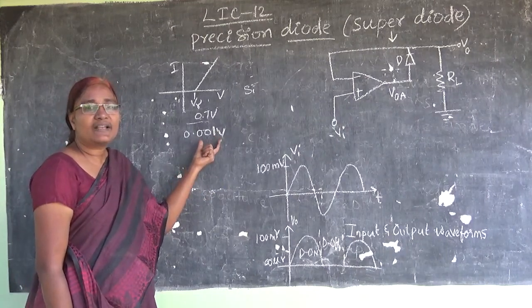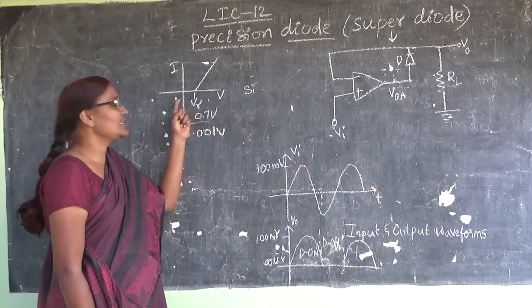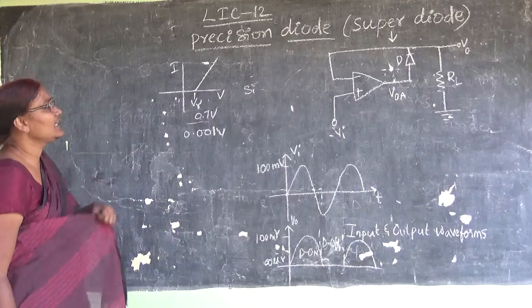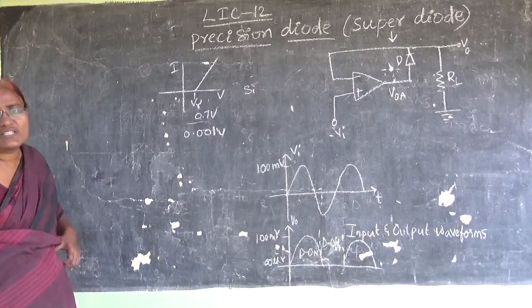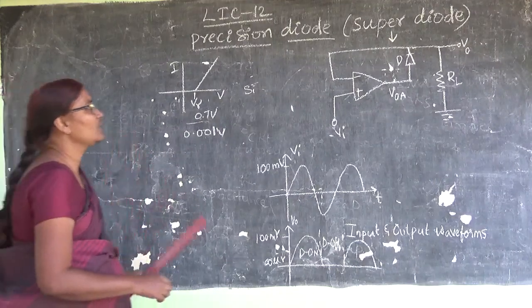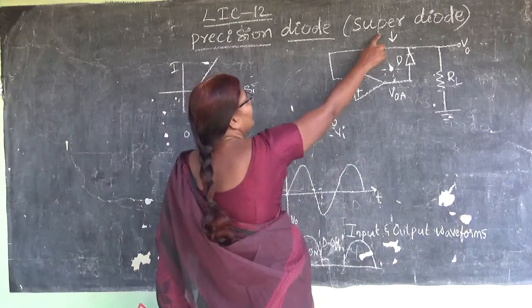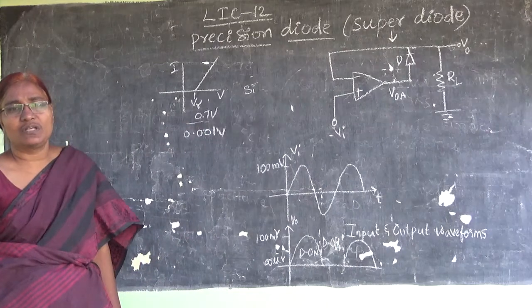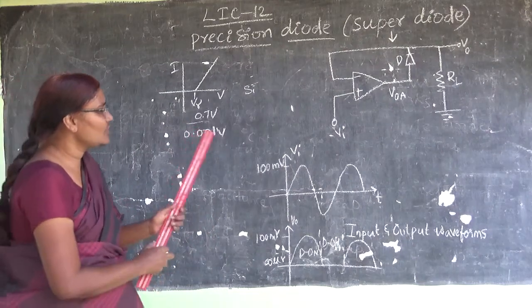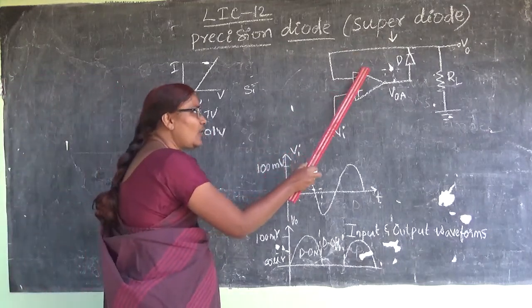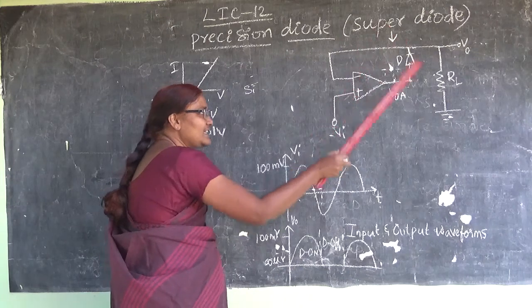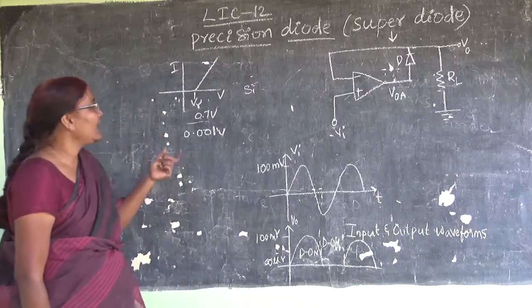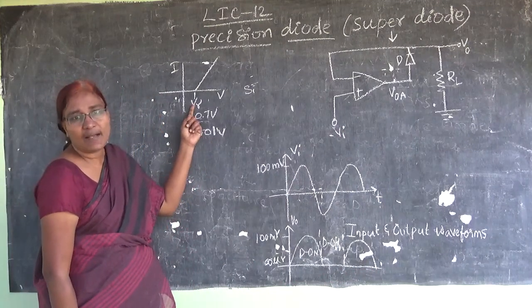It cannot rectify the voltages which are less than cut-in voltage. So to avoid this difficulty, what we are going to use is a super diode, also called a precision diode. These precision diodes can operate and rectify voltages which are very, very less than V gamma.